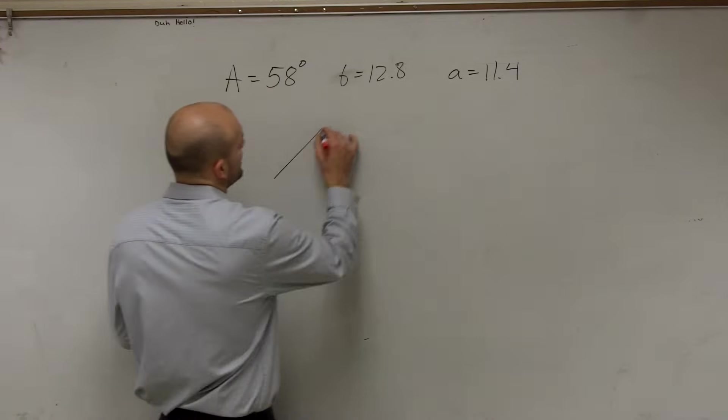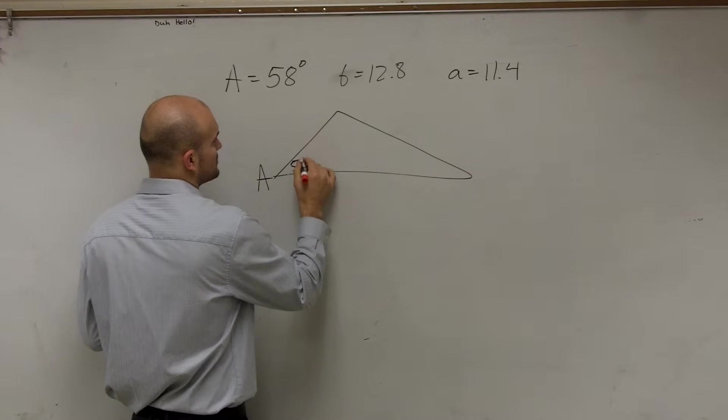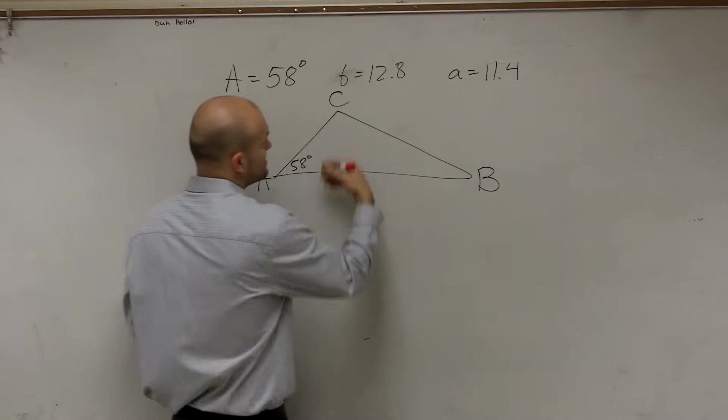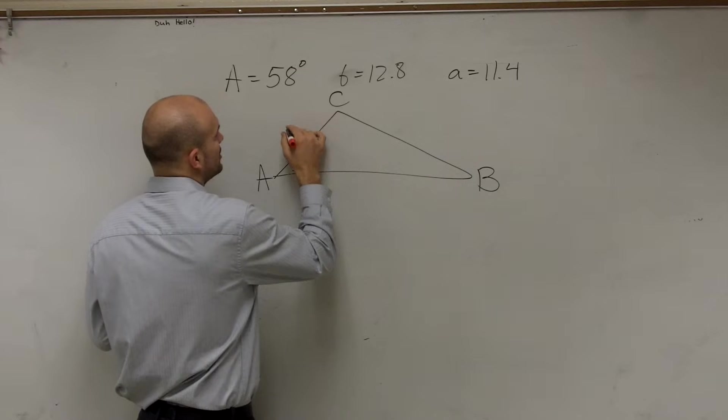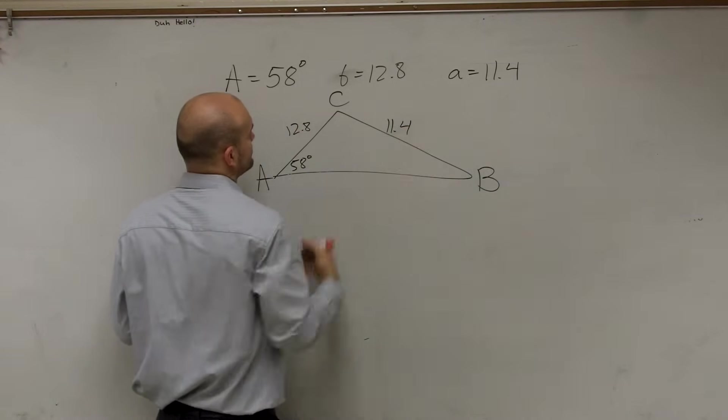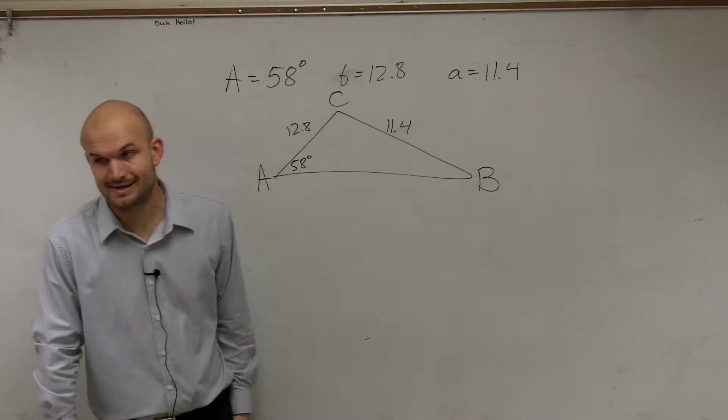Let's go and draw the triangle like we would any other time. So I could say here's A, which is at 58 degrees. Here's C, and we'll call this one B. C we don't know any information for, B we know this is 12.8, and A we know is 11.4. So automatically, ladies and gentlemen, you can see that I have side-side-angle.